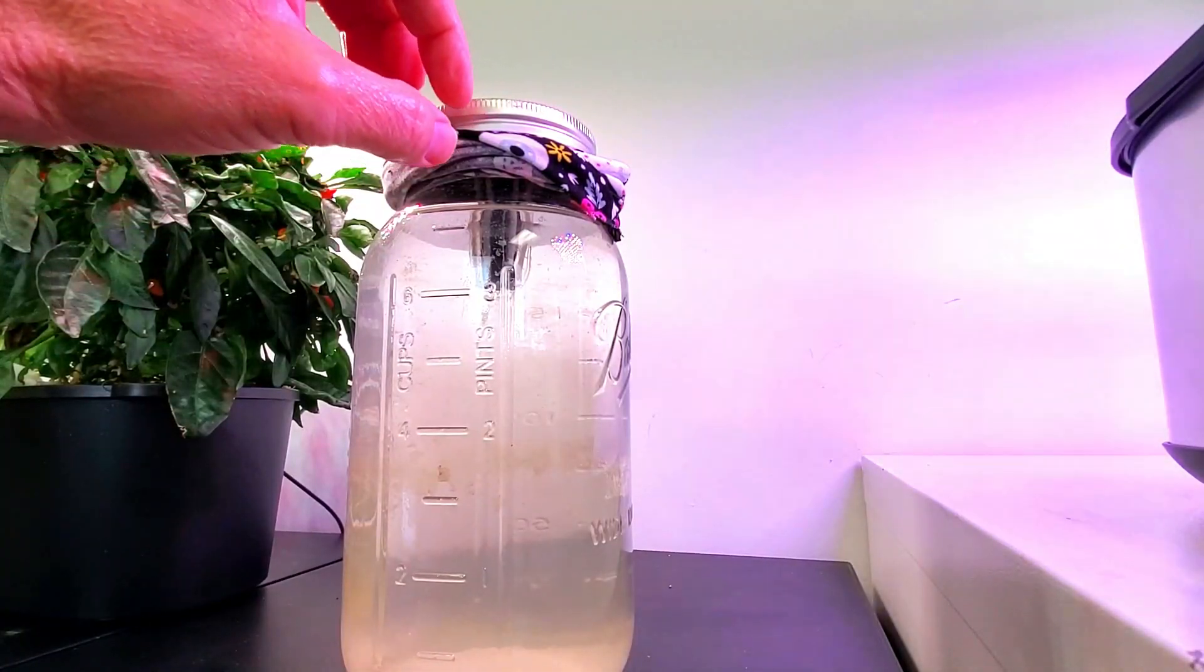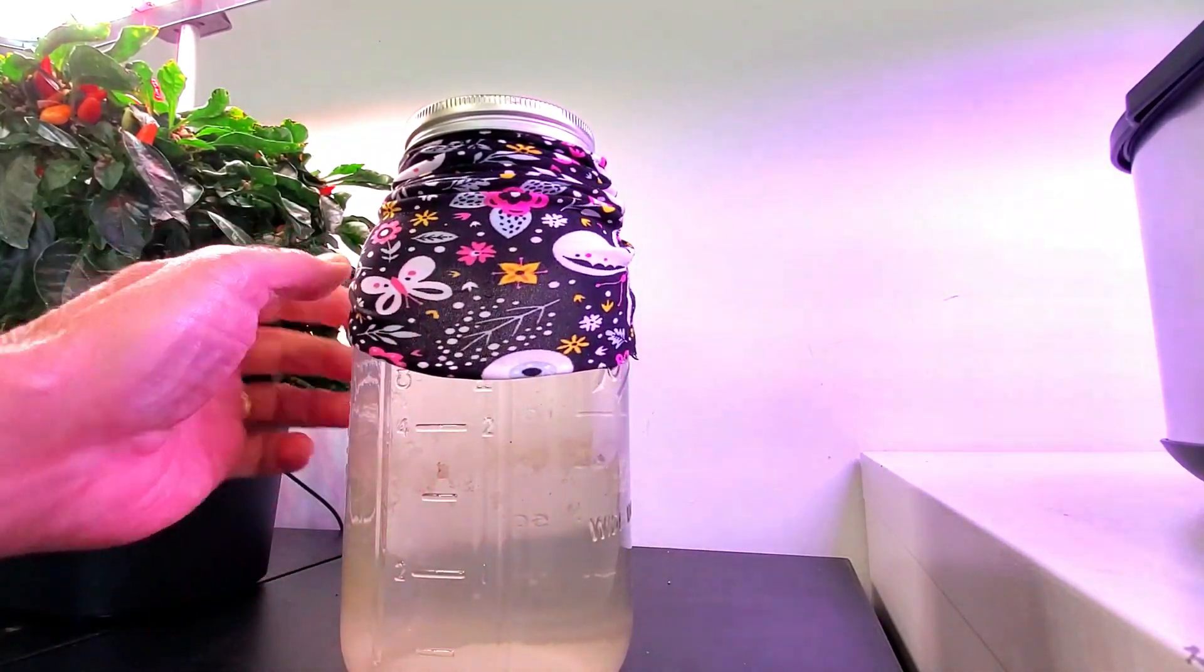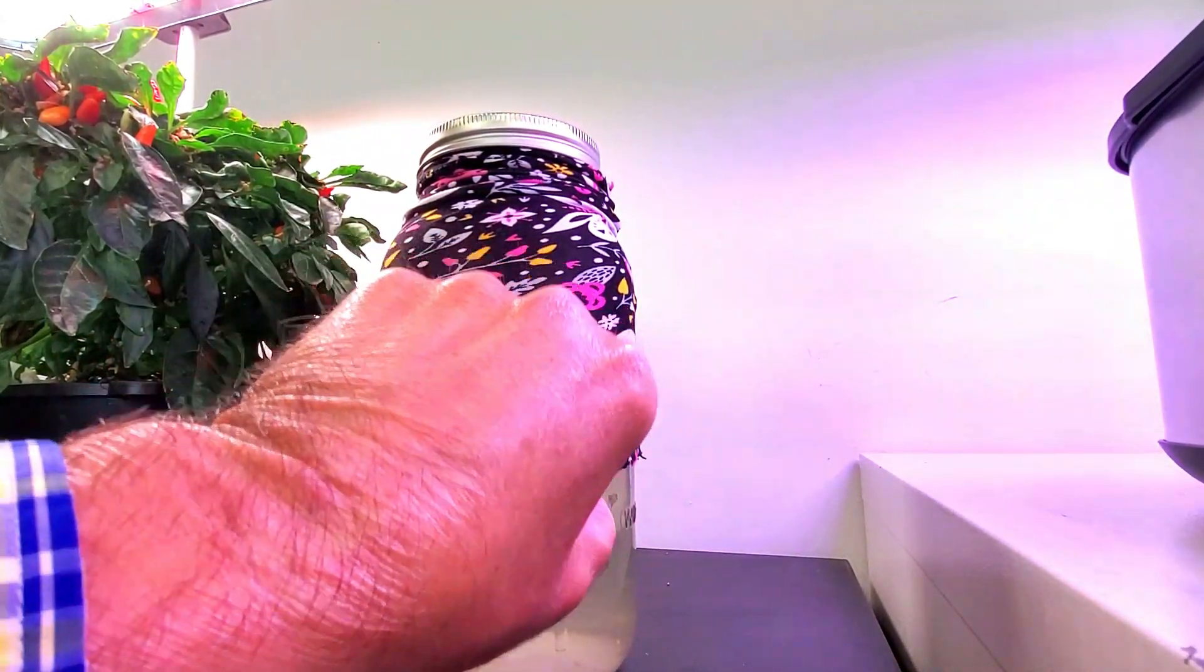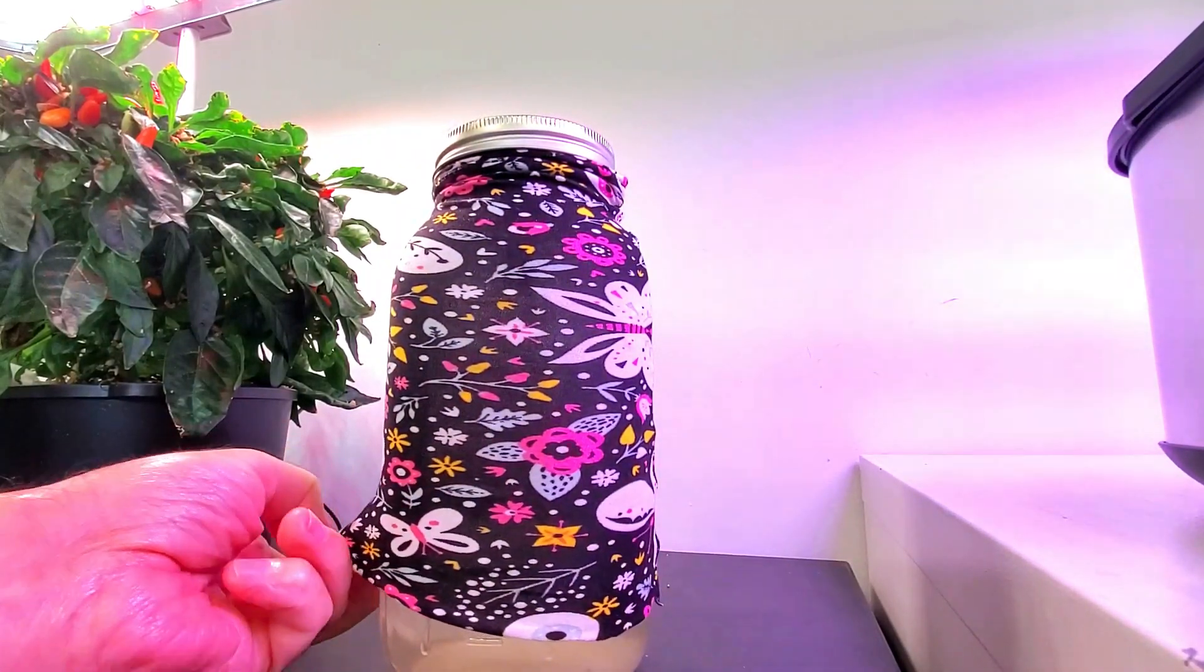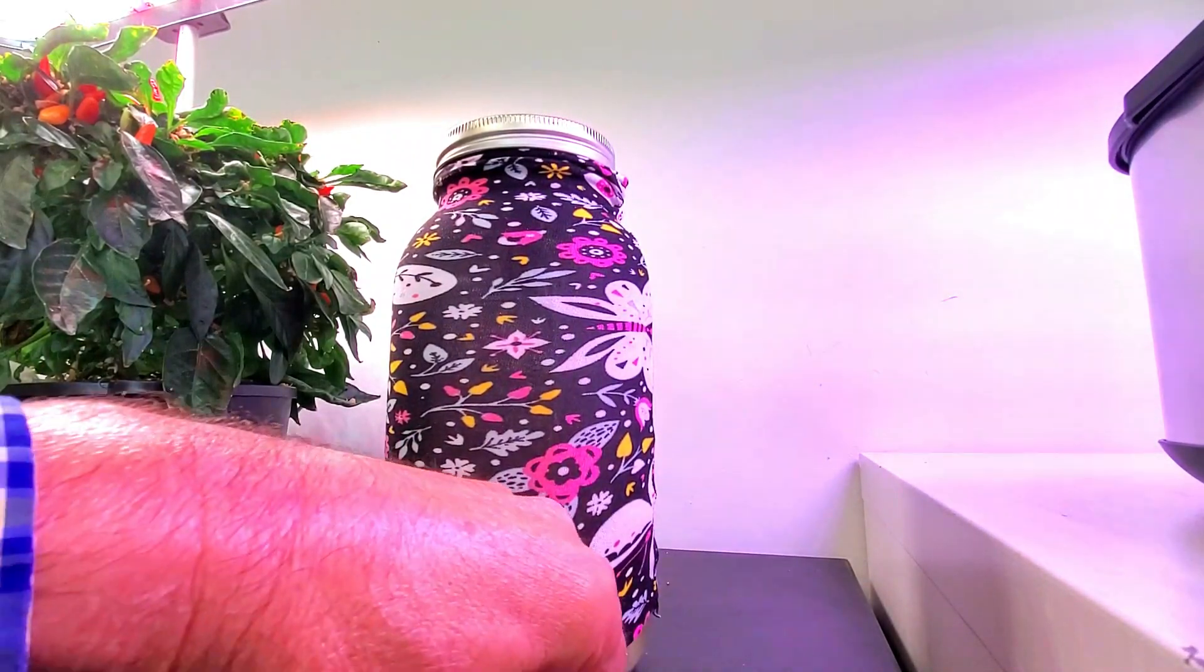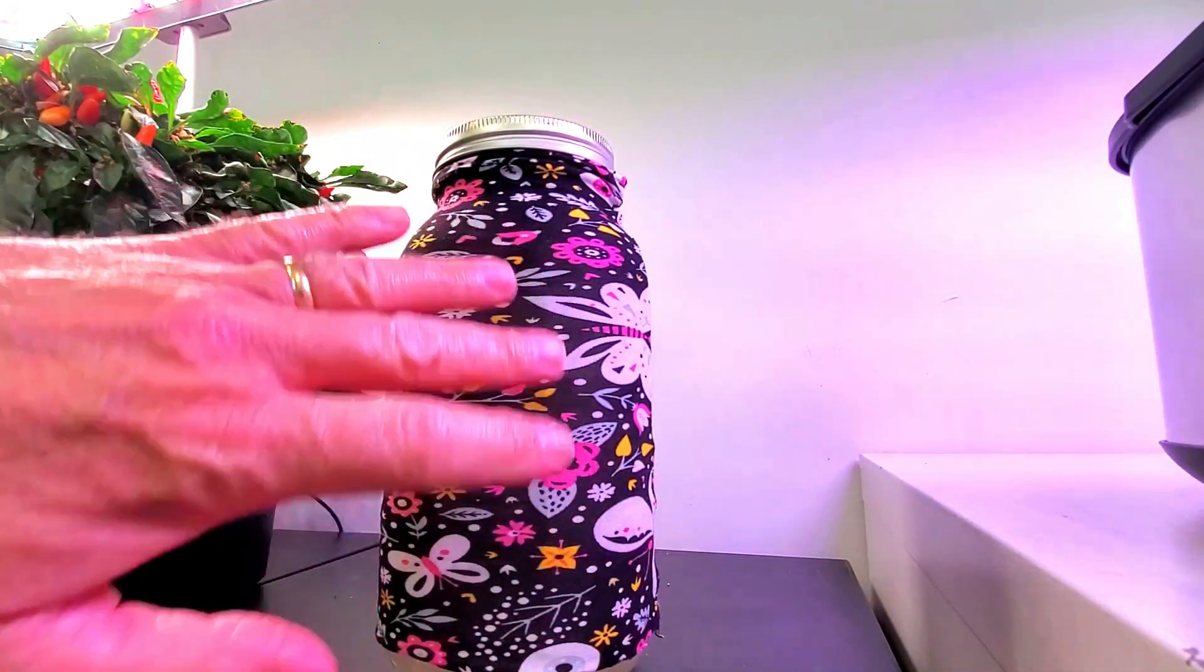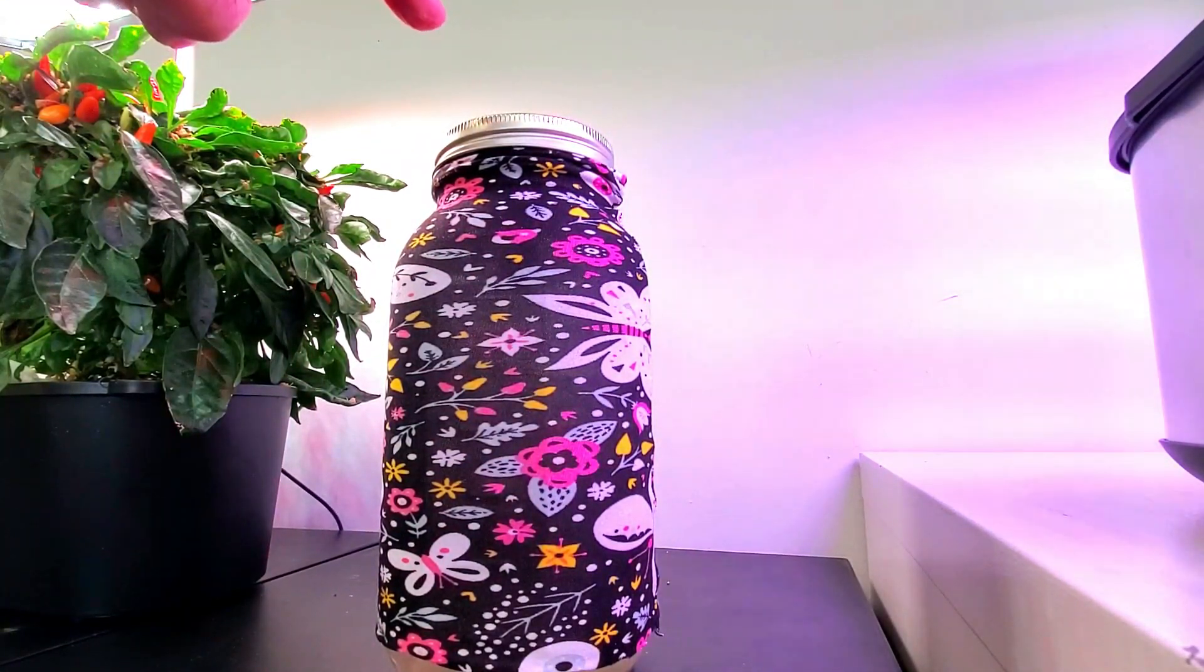To prevent the growth of algae inside the jar with the nutrients, I've taken a pair of child's leggings that are stretchy, clipped off the end of one leg, and slid it right over the top of the jar. This will help keep the algae from growing inside and allow the lettuce to continue to grow on top.